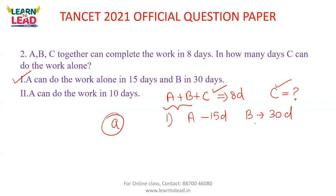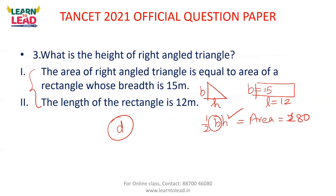Option A is the answer — Statement 1 alone is sufficient to answer the question. A, B, C together take 8 days; A takes 15 days, B takes 30 days. Using basic logic and the equation, C alone can be calculated. Statement 1 alone is sufficient to answer the question.